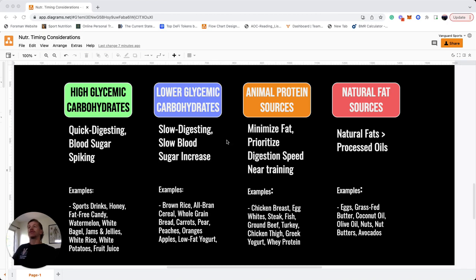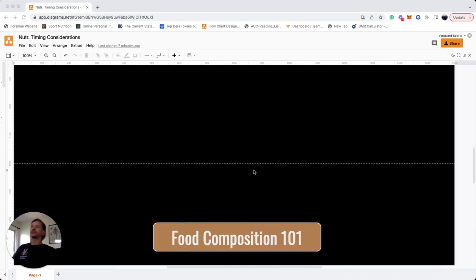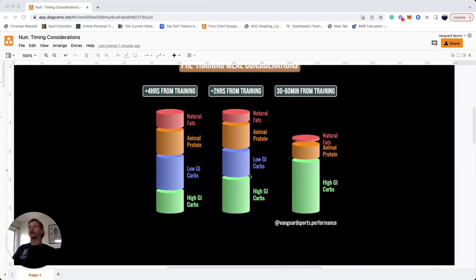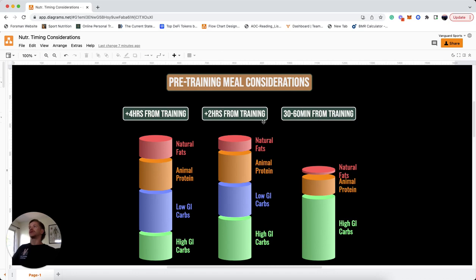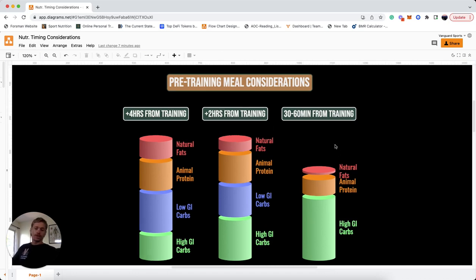Now that we've refreshed ourselves on food composition, let's go into our pre-training meal and some of the considerations and things we're going to tweak depending on when we're getting this meal. We've got three different scenarios: one is if we get this meal around four hours before training, the next is around two hours before training, and the final one is 30 to 60 minutes before training.